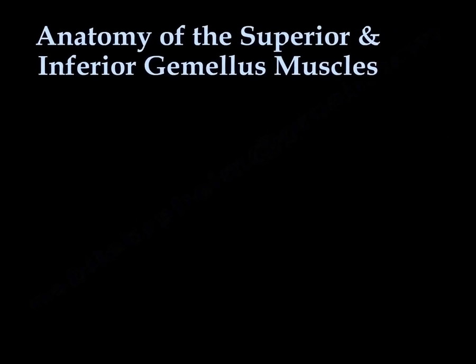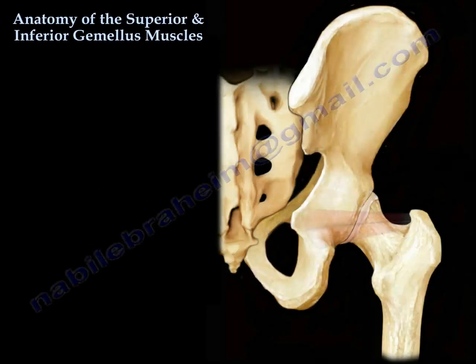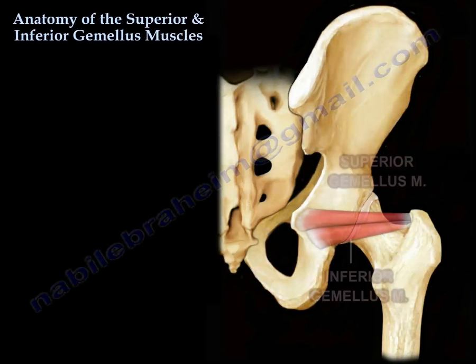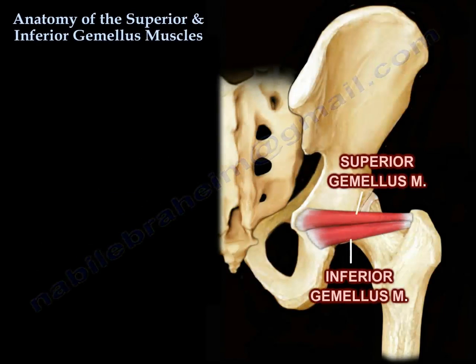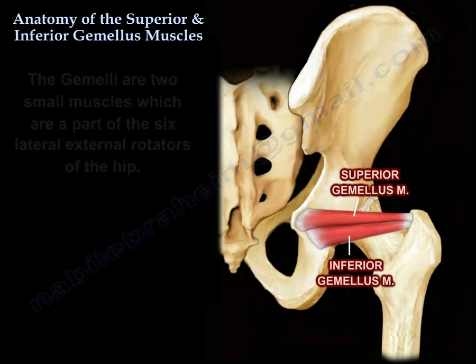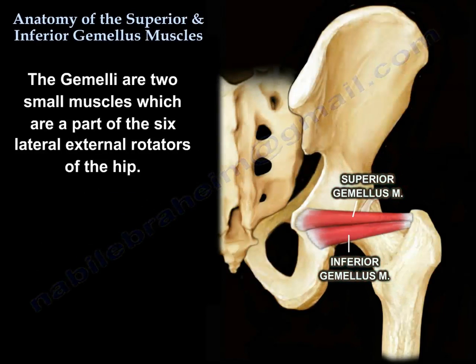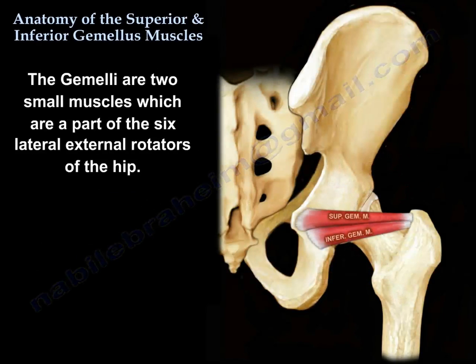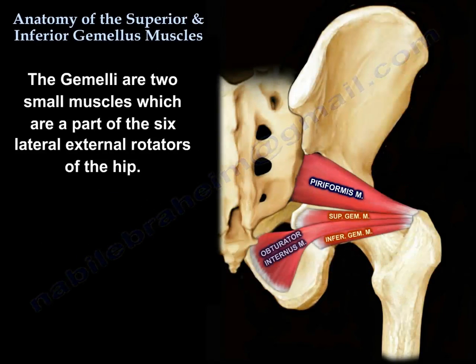Anatomy of the superior and inferior gemellus muscles. The gemellae are two small muscles which are part of the six lateral external rotators of the hip.